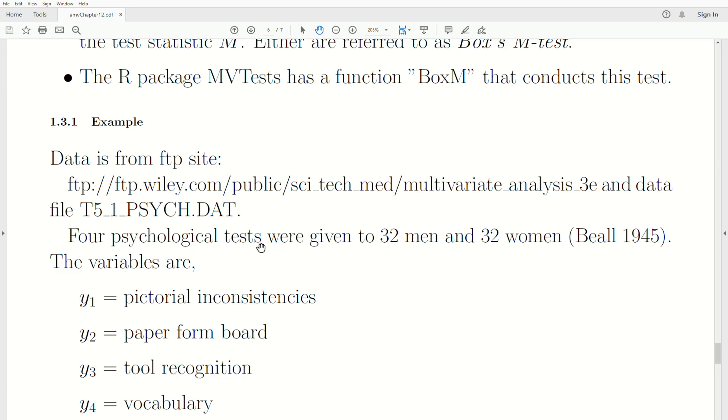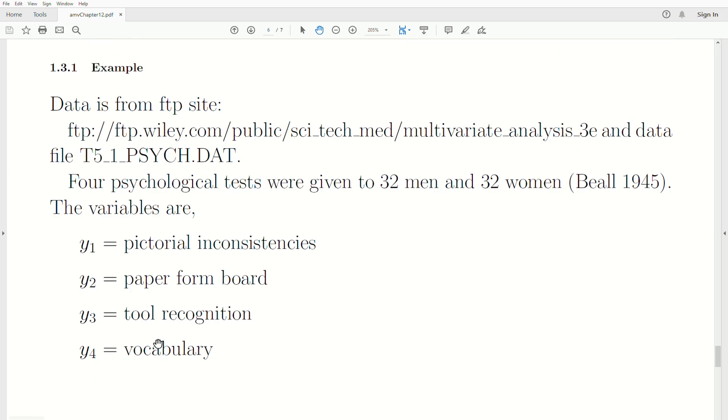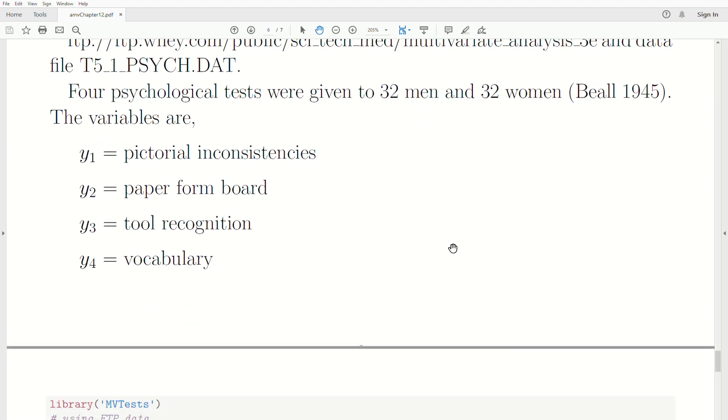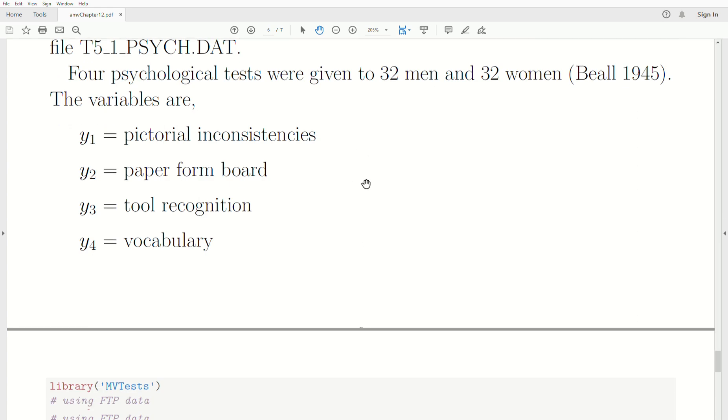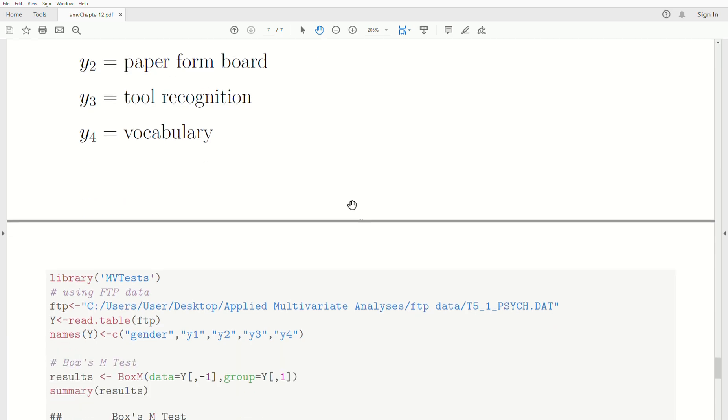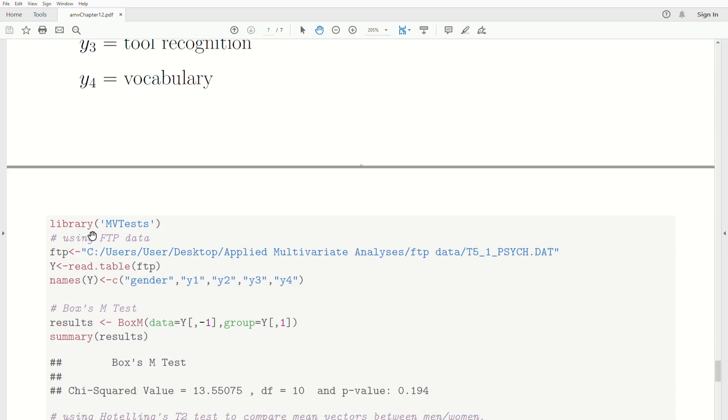There's four psychological tests that were given to 32 men and 32 women. And the variables were these four. One objective is to test: are the mean vectors the same between men and women? Well, we would do that using Hotelling's T-squared test or a MANOVA test. But one of the assumptions is that the covariance matrices for men and women are the same.